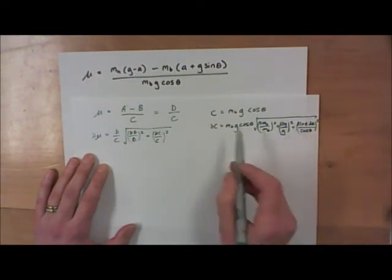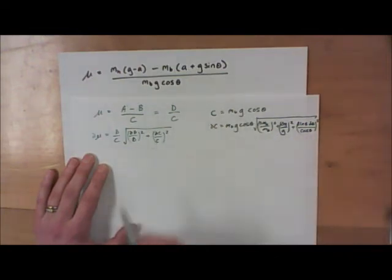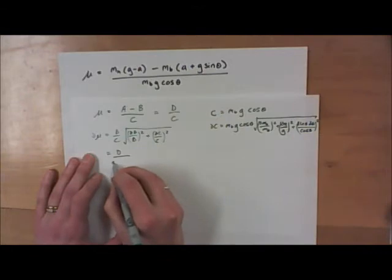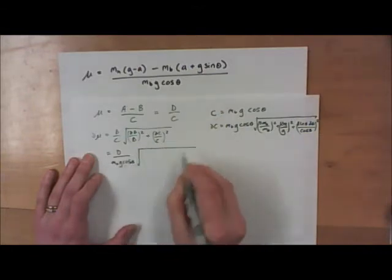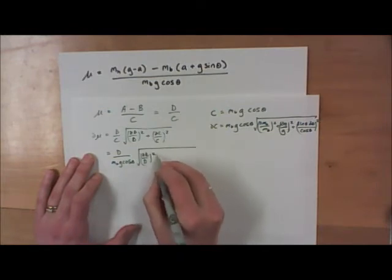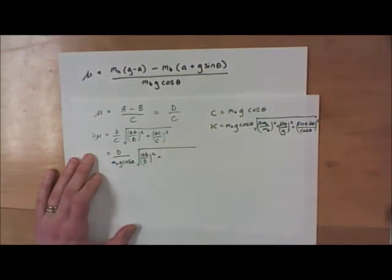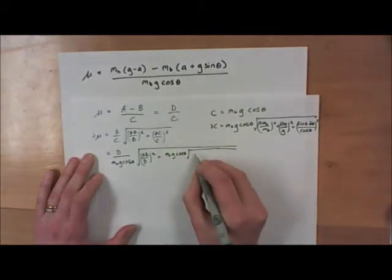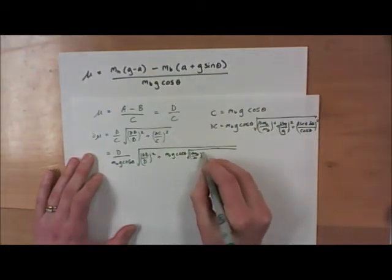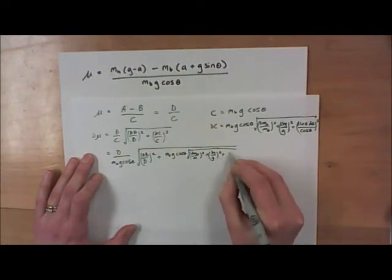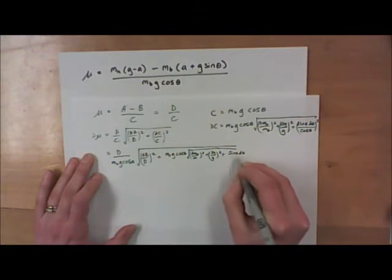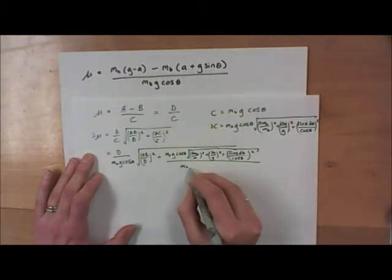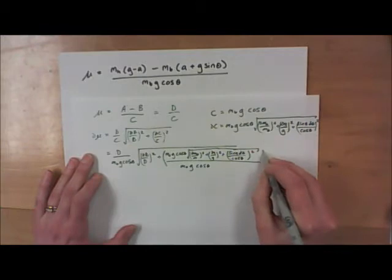Now I've got the uncertainty of C and C itself, and I'm going to nest those two things inside the expression. That gives me D over C — writing in C now — square root of the fractional uncertainty of D squared, plus, nesting in my solution: M_B times G times cosine theta times the square root of the fractional uncertainty of M_B squared, plus fractional uncertainty of G squared, plus sine theta times delta theta divided by cosine theta squared — all over M_B times G times cosine theta, all squared.